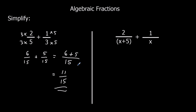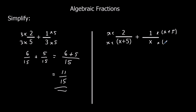With algebraic fractions, the principle is exactly the same — we just need to make the bottom numbers the same. So we're going to times this one, top and bottom, by x. And for this one, we're going to do x plus 5 times top and bottom.